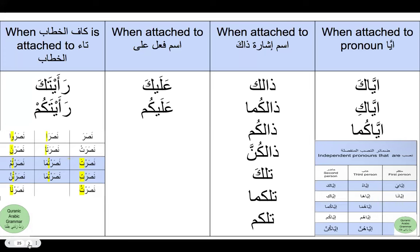The third case when you will find kaf as harf is when it attaches itself to ism al-fi'l alayka. We have learned ala as harf jar, which makes an ism majrur after it. However, when ala is an ism al-fi'l in two cases — one of which is the meaning of ilzam — as in alayka, alaykum, whenever you find kaf al-khitab attached to ala which is ism al-fi'l in the meaning of ilzam, you call that kaf al-khitab a harf la mahalla lahu min al-i'rab.